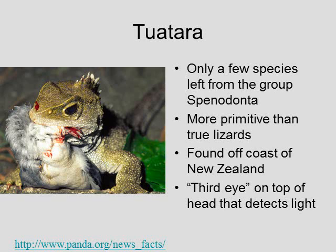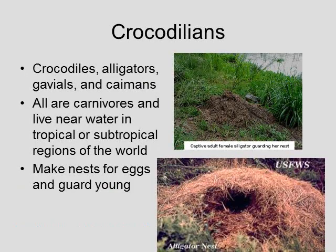The tuataras are a very small, primitive group of reptiles found off the coast of New Zealand. They look like lizards but are placed in a separate group for several reasons, one being that they have a third eye on the top of their head that helps them detect light.